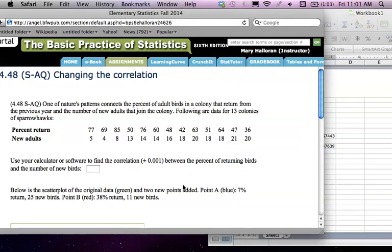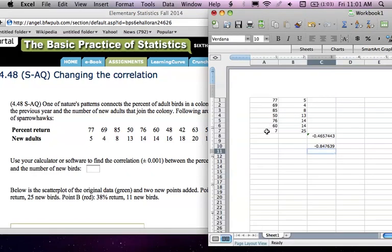And then it also says, then add, instead of doing 7, 25, enter 38, 11. So I could just as easily come back here and go 38, 11. And then this number right here is already set up to do the correlation for those sets.